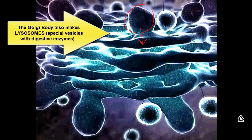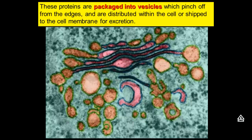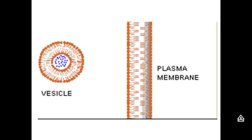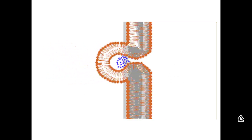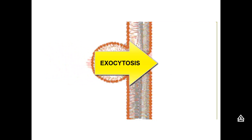Here you see a great picture of the Golgi body — this is an animation — with vesicles on either side being pinched off. Here's also an electron micrograph picture of a Golgi. When the vesicle does reach the plasma membrane, all of the contents from the inside of the vesicle are sent outside. And that's called exocytosis.